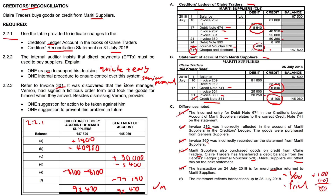Referring to invoice 301: it was discovered that store manager Vernon had signed a fictitious — non-existent — order form and took the goods for himself when they arrived, misusing his position of power. Besides dismissing Vernon, provide one suggestion for action against him and one to prevent this in future.